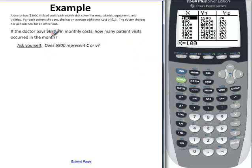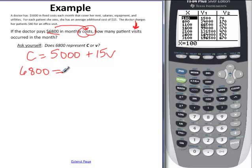Consider this. If the doctor pays $6,800 in monthly costs, how many visits occurred? So now we know $6,800 is a cost, and we want to find the visits. This is what we're looking for, is the visits. Same equation, C is equal to $5,000, because it's still a cost equation, plus $15V, but this time we know C. So $6,800 goes where the cost is. And then we finish out the rest of the equation.